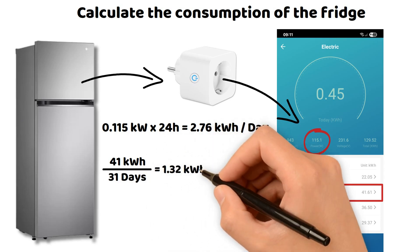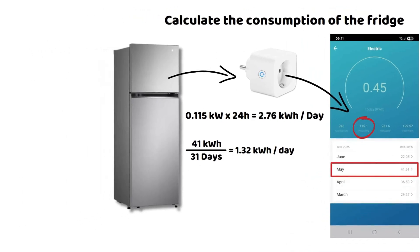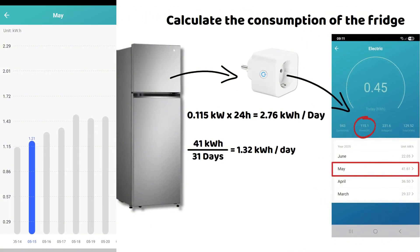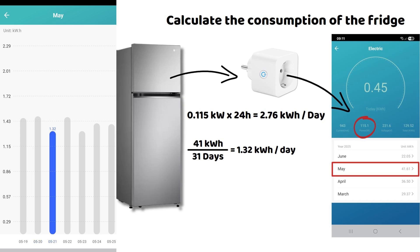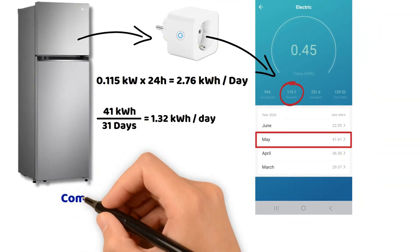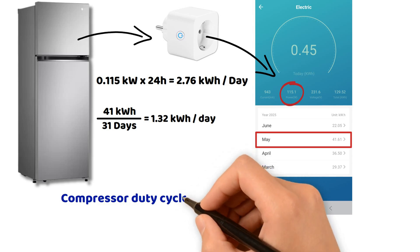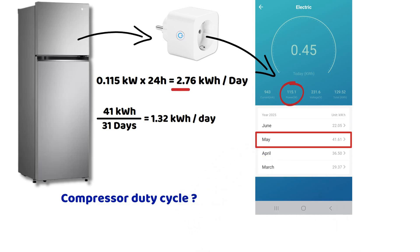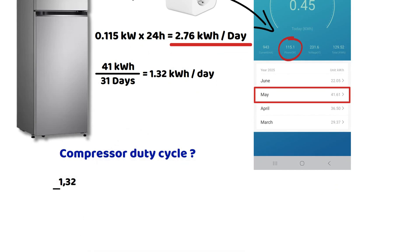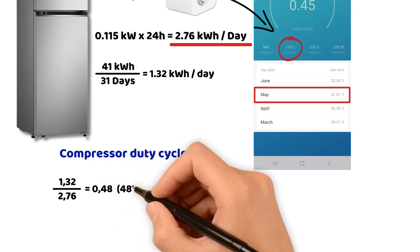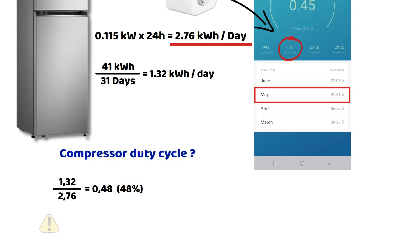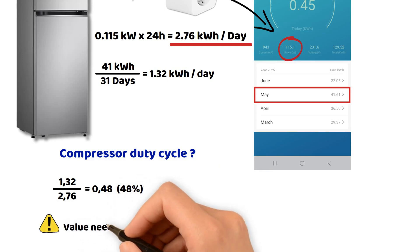The variation from one day to another depends quite a lot on the day of the week, the number of people at home, but mostly on the number of times the fridge is opened and closed. Now we are going to answer the question about the running cycle of the fridge — the percentage of time the compressor runs. Earlier I calculated the consumption if it ran 100% of the time: 2.76 kilowatt hours per day. Dividing 1.32 by 2.76 gives approximately 0.48, or 48%. This value should be adjusted based on ambient temperature, how often the fridge is opened, how full it is, etc., but it gives us a good estimate for further calculations.